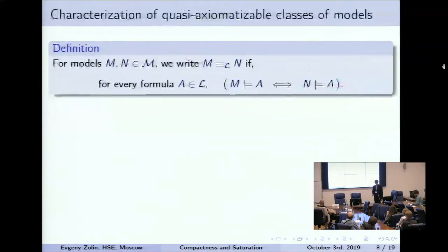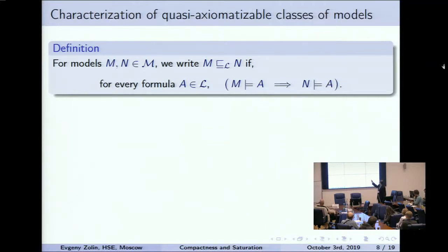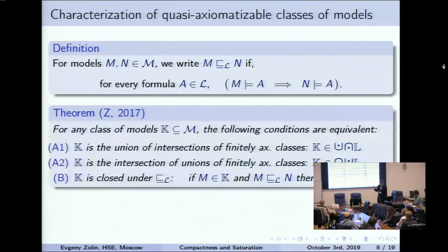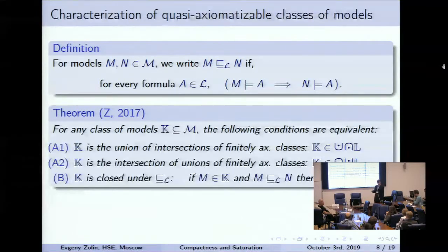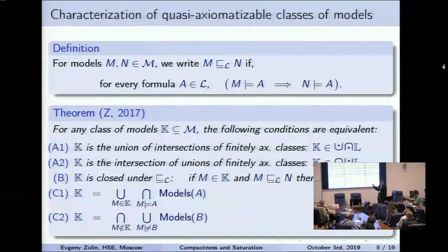We can formulate general criteria for the upper species. We can define the notion of equivalence of two models — they satisfy the same formulas. If we have only one implication, we say one model is subsumed by another. In these terms, we can formulate the necessary and sufficient condition for a class to be in the upper species: a class is representable as the union of intersections of finitely axiomatizable classes if and only if it is closed under this subsumption relation between models.